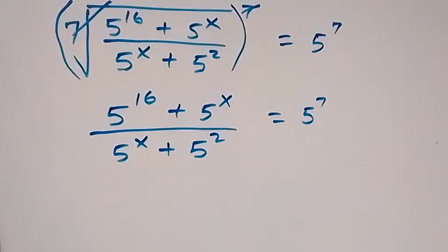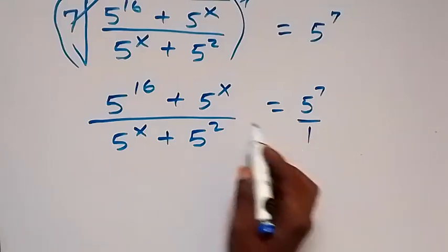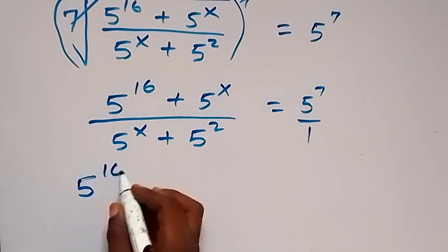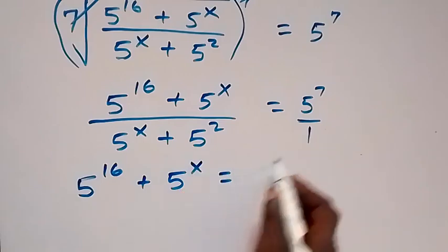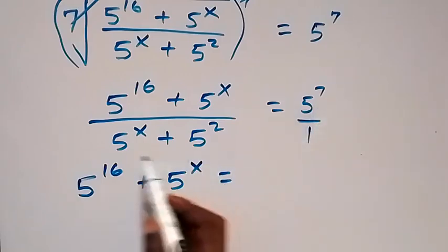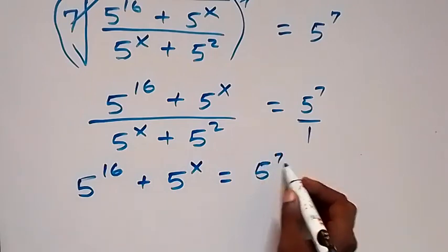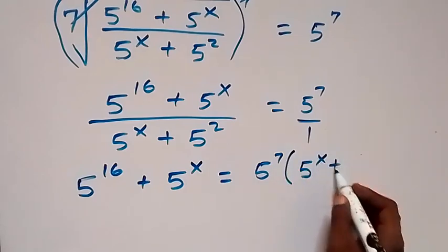This is also 5 raised to power 7 divided by 1, and here we can cross multiply. So 5 raised to power 16 plus 5 raised to power x, multiplied by 1, equals 5 raised to power 7 multiplied by the bracket 5 raised to power x plus 5 squared.